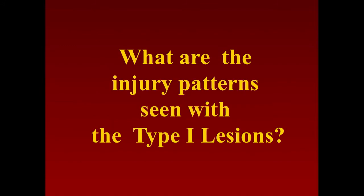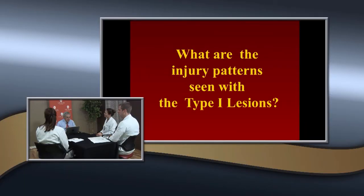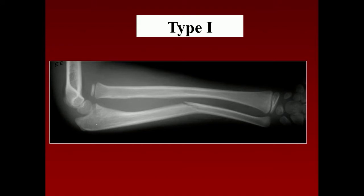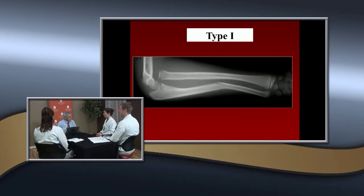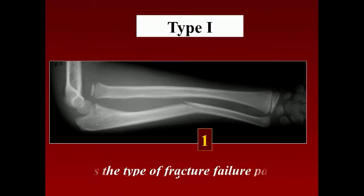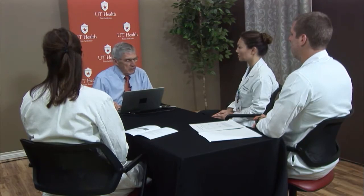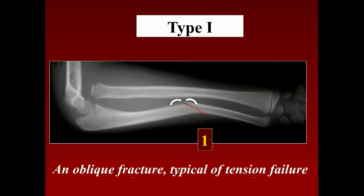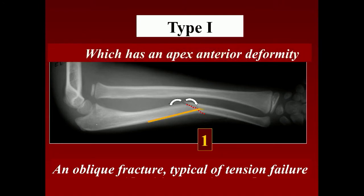Starting with the Type 1 injury pattern: the most obvious finding is the ulnar shaft fracture — a real diaphyseal fracture. Structurally, this is a tension failure: a bending force applied, failing on the tension side and remaining intact on the other — a greenstick fracture. The apex is anterior and the radial head also displaces anteriorly, so the overall deformity pattern is anterior — an extension-type injury.